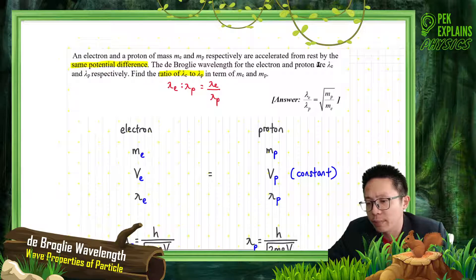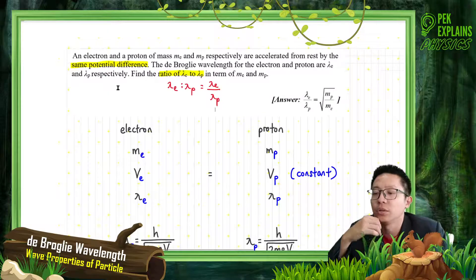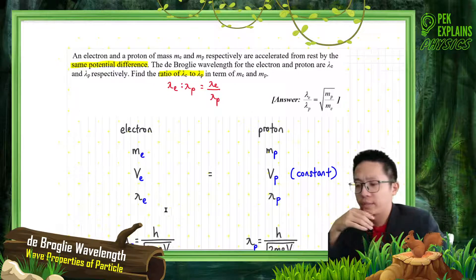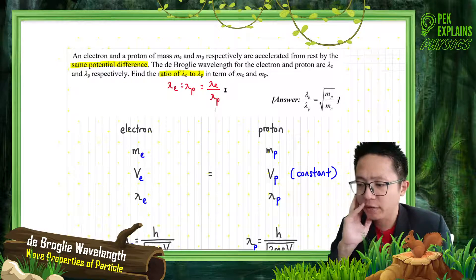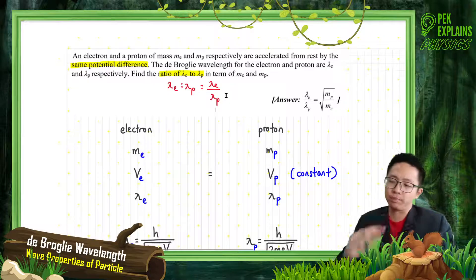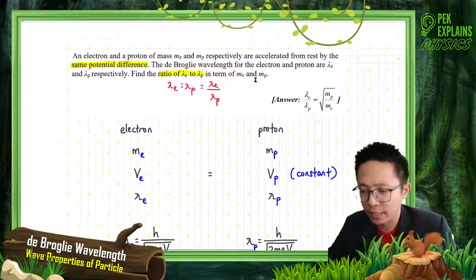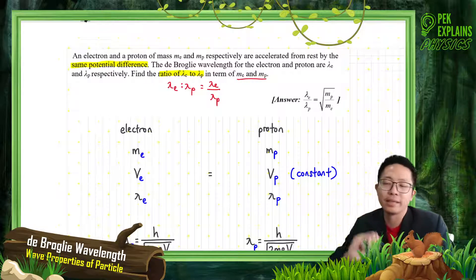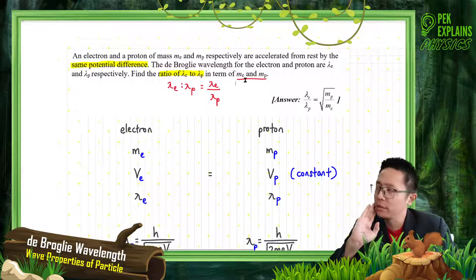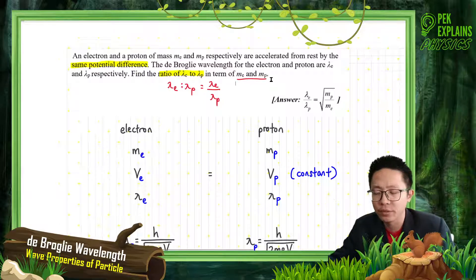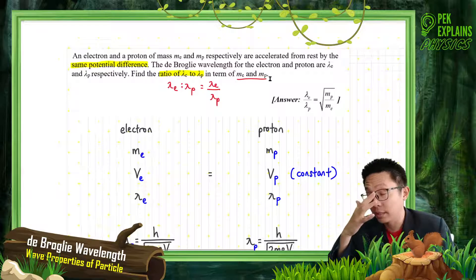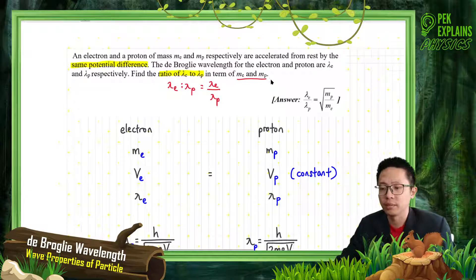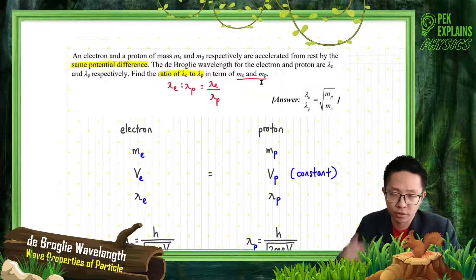The de Broglie wavelength for electron and proton are lambda E and lambda P respectively. We have the wavelength for electron and the wavelength for proton, but we don't know exactly what the value of lambda electron and lambda proton are. Find the ratio of lambda electron over lambda proton in terms of mass of electron and mass of proton. That means the final answer must be in terms of these two variables — must have mass of electron and mass of proton symbols. No need to find numerical values.